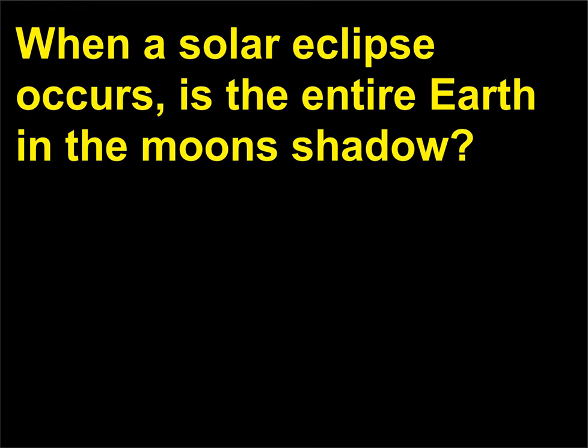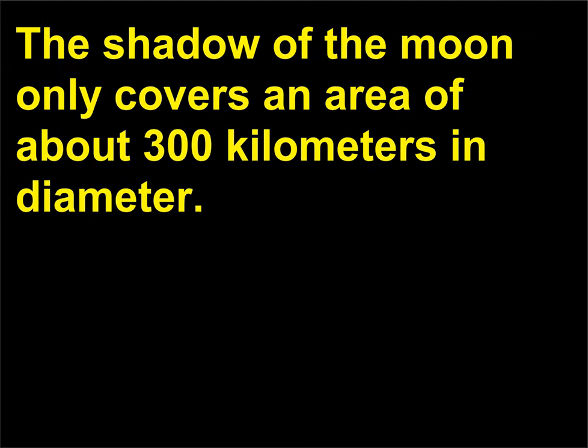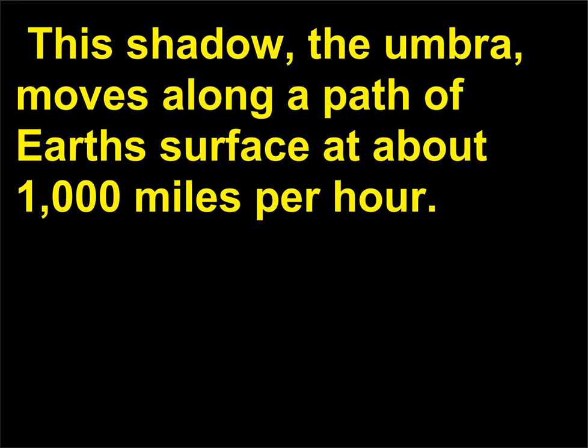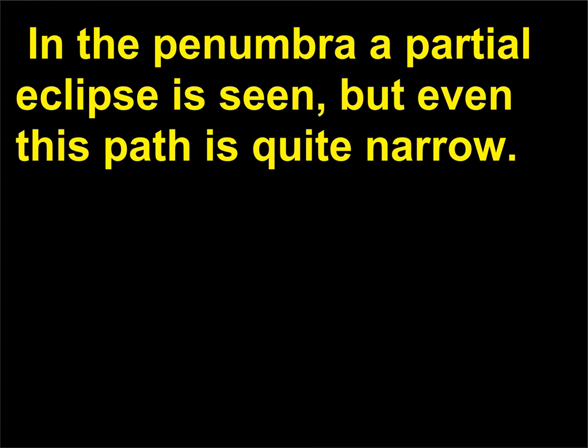When a solar eclipse occurs, is the entire earth in the moon's shadow? The shadow of the moon only covers an area of about 300 kilometers in diameter. This shadow, the umbra, moves along a path of earth surface at about 1000 miles per hour. In the penumbra a partial eclipse is seen, but even this path is quite narrow.